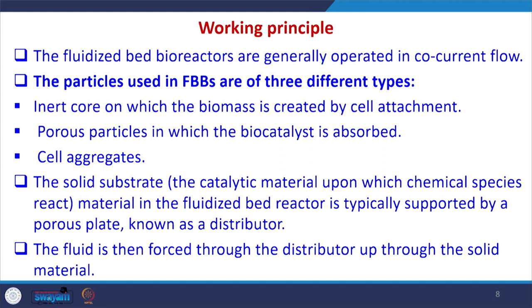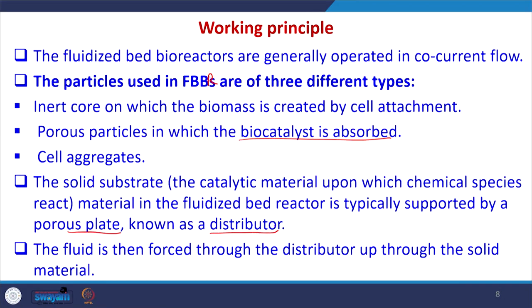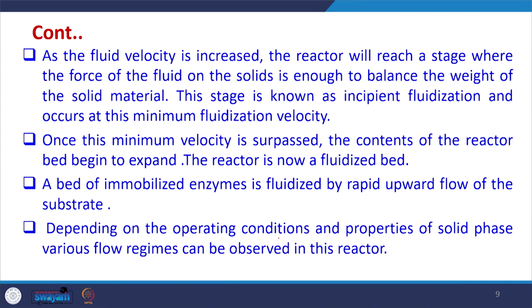The working principle of FBBR is as follows. Fluidized bed reactors are generally operated in co-current flow — the air and water both flow from the same side, which is the bottom of the reactor. The particles used in FBBR are of three types: an inert core on which biomass is created by cell attachment; porous particles in which the biocatalyst is adsorbed and cell aggregation may occur; and the solid substrate. The catalytic material in the fluidized bed reactor is typically supported by a porous plate known as the distributor, and the fluid is forced through the distributor up through the solid material.